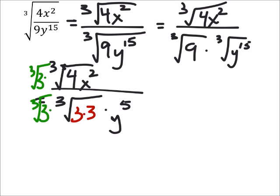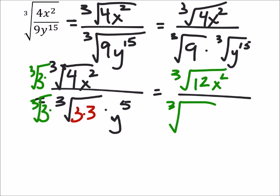Now if I multiply these out, in the numerator I would have the cube root of 3 times 4 is 12 times x². In the denominator I've got the cube root of 3 times 3 times 3 times 3 which is 27, and I still got that y to the power of 5. I'm going to move that to the front. Now the cube root of 27 is 3, so that comes out.